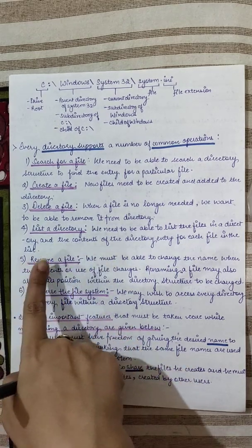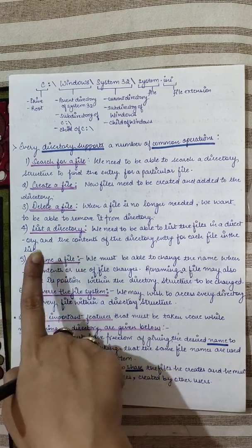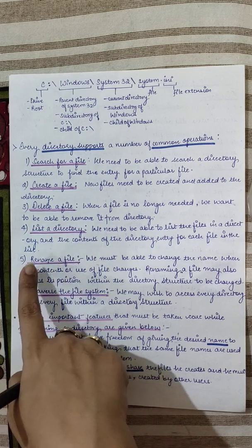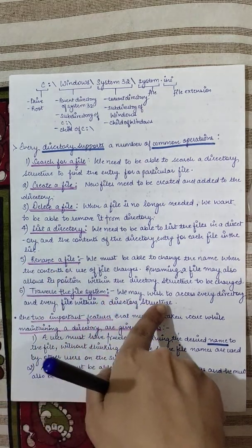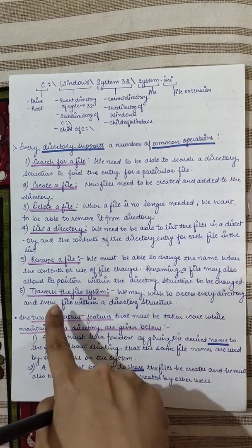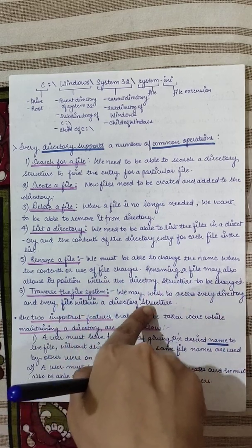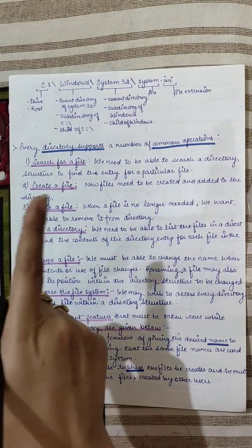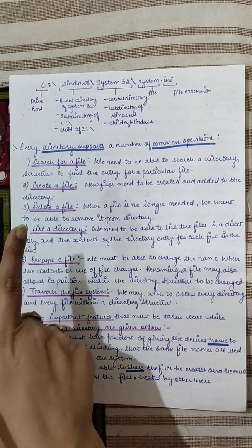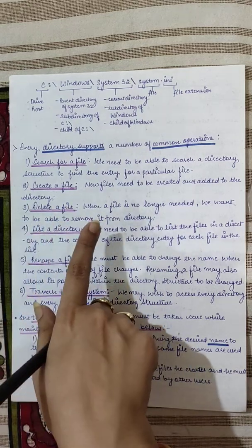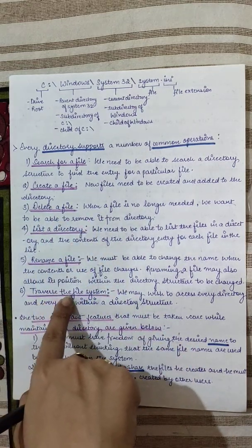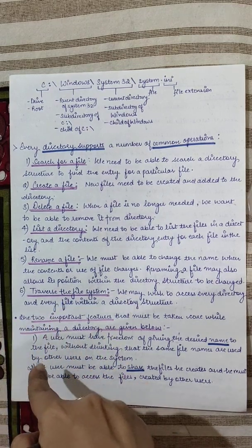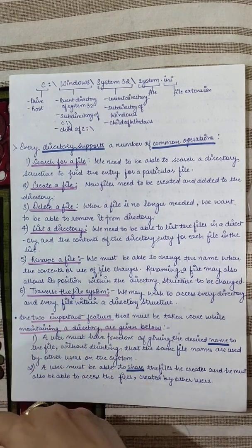We can also change the position of a file in the directory structure. Another operation is to traverse the file system — we may wish to access every directory and every file within the directory structure. Using the traverse operation, we can see the tree showing how many directories are linked together. These operations must be supported when designing or organizing a directory structure.